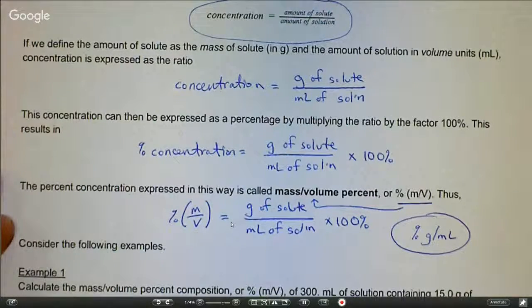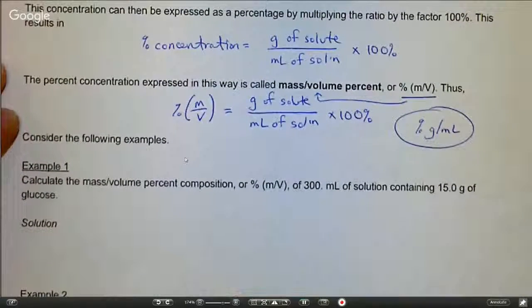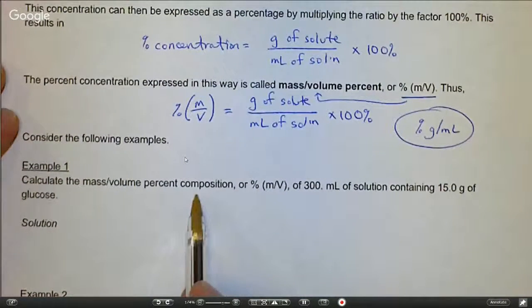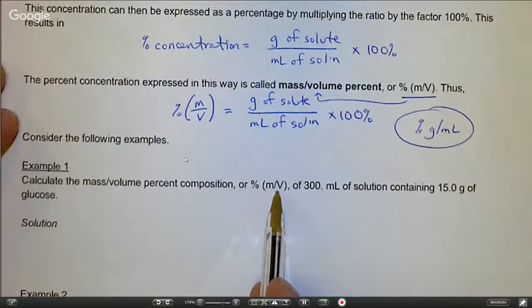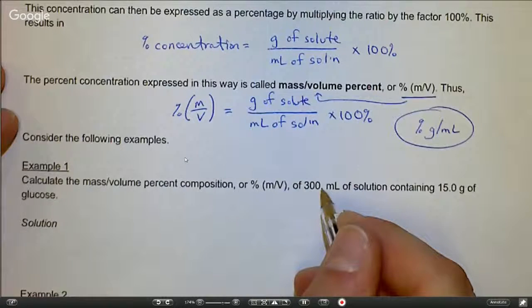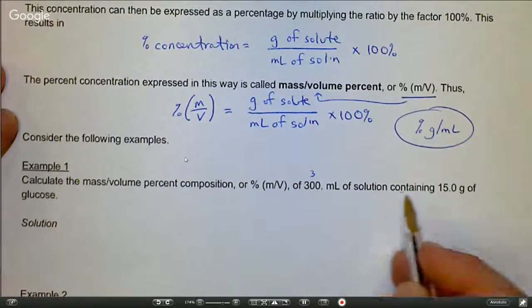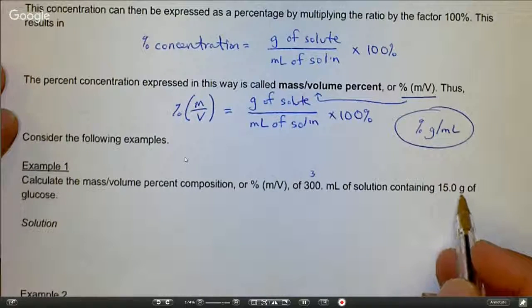Let's go to example one to see how this works out. Calculate the mass volume percent composition of 300 milliliters—notice it's 300 dots, so there are three significant figures—of a solution containing 15.0 grams of glucose.